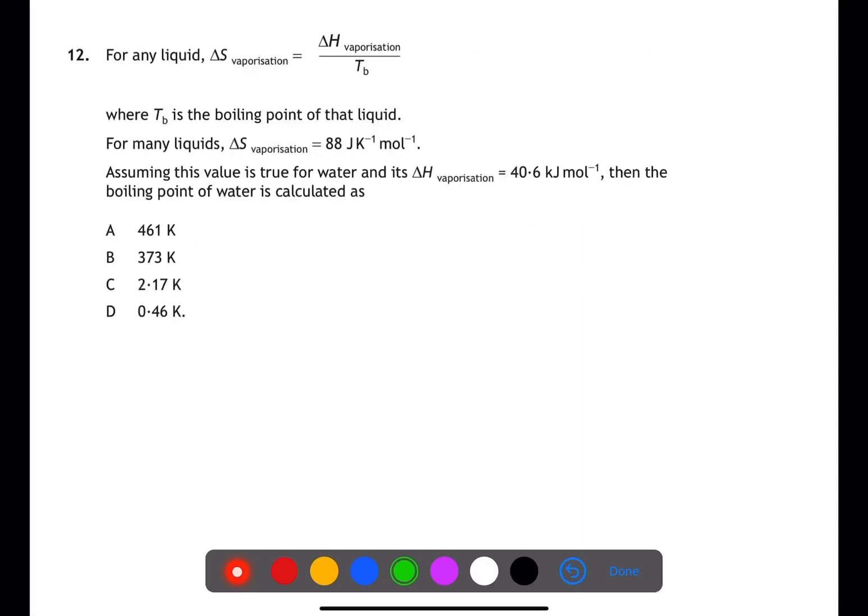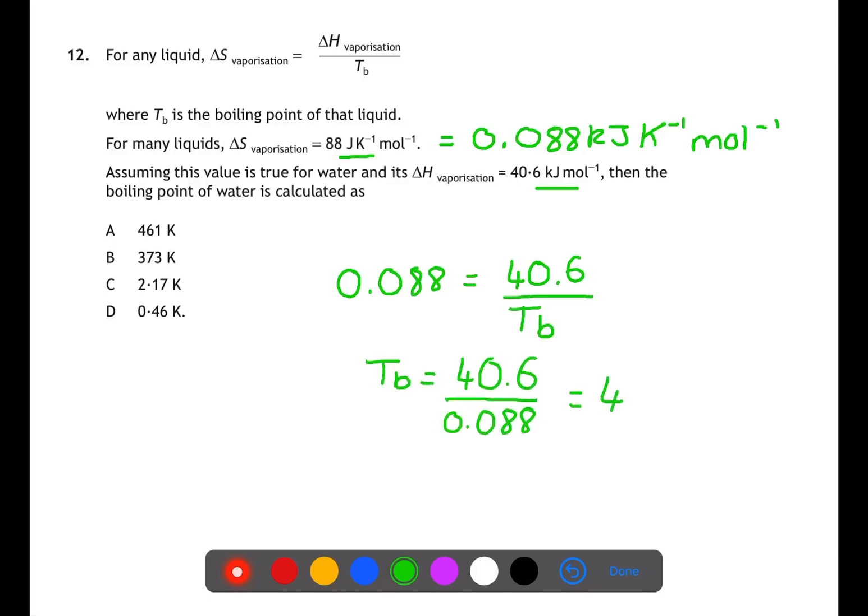For question 12, we need to take the values from the question and insert them into the equation given. We need to take care with looking at the units. The units for delta S are joules per K per mole, whereas the units for delta H are kilojoules per mole. We need to convert the delta S into kilojoules before we begin by dividing by 1000. We can then take the two numbers and put them into the equation. All of the answers given would be possible answers if you were to use the incorrect numbers or put them into the incorrect places.